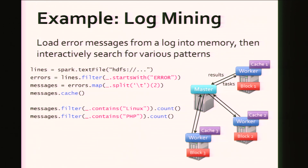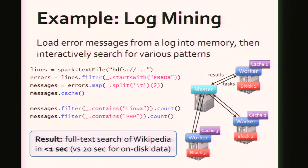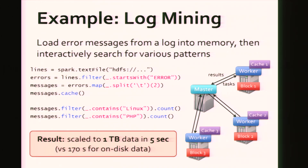So how fast can this actually go? Is it actually interactive? One of the demos we did is a full-text search of Wikipedia — about 50 gigabytes of data on 20 machines. Using Spark, you can do full-text search in about half a second. If you started with on-disk data with existing big data tools, it would take about 20 seconds. We also scaled this up to a terabyte of data, and you can do full-text search of that in five seconds. This kind of system really changes the types of questions you can ask about big data sets and the speed at which you can answer them.